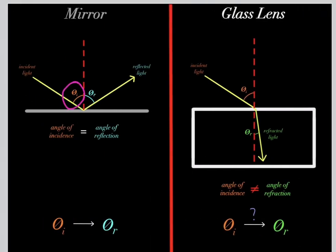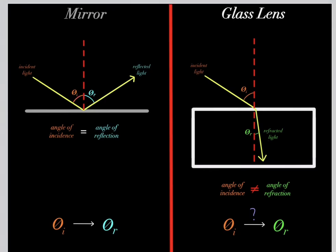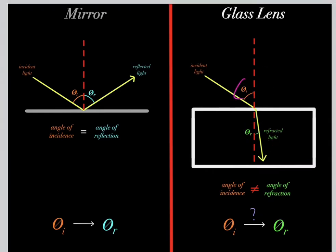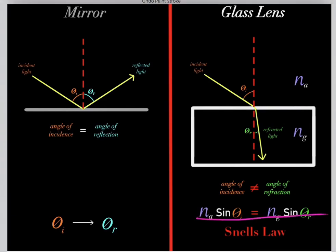So if you have the angle of incidence, how do you determine the angle of reflection? Again, the angle of incidence always equals the angle of reflection, so it's very easy to determine the angle of reflection. However, how do you determine the angle of refraction? Because we know the angle of incidence usually does not equal the angle of refraction. In order to determine the angle of refraction, you need to use Snell's law.